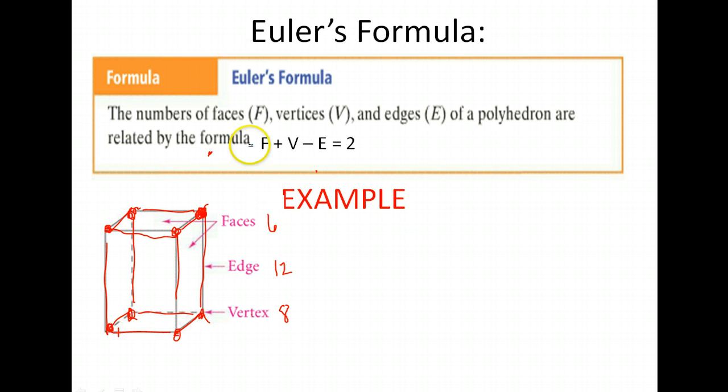Let's test our formula, see if it works. So it's supposed to be the number of faces, six, plus the number of vertices, eight, minus the number of edges, twelve, is supposed to equal two. Is it equal two? Yeah, six plus eight is fourteen, and fourteen minus twelve is two. So we verified it. It does work.